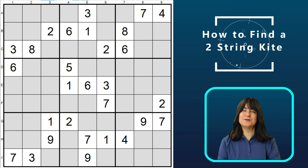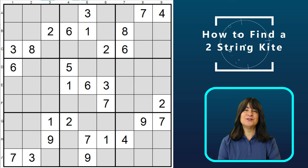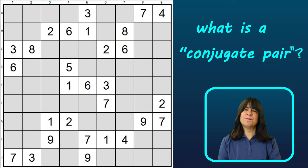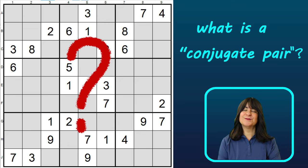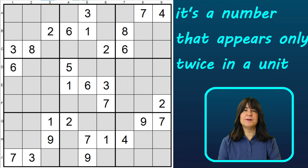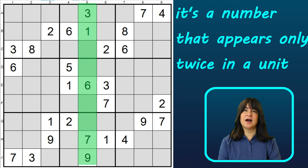In this video, I'll show you how to identify a two-string kite and how you can use it to eliminate candidates. Let's start by defining what a conjugate pair is. It sounds like a fancy word, but it's simply a number that appears only twice in a unit — and that's a row, a column, or a block.